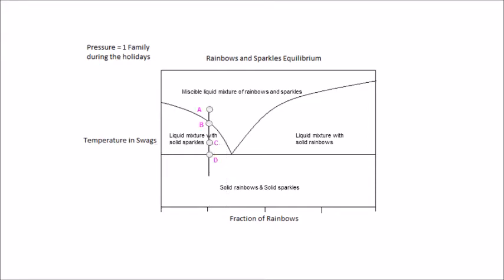At point D, the liquid mixture reaches a specific freezing point based on its composition. At this temperature, both components, sparkles and rainbows, crystallize. We theoretically have three phases at this point. Again, a horizontal line that crosses D can be drawn. This line is also known as the eutectic temperature line.